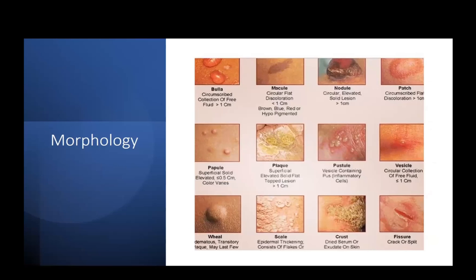Just a quick refresher. There are primary morphologies. Some textbooks will list one centimeter as the cutoff, some will list 0.5. Flat smaller lesions less than one centimeter are called macules; larger flat lesions greater than one centimeter are called patches. Same with papules — raised solid lesions less than 0.5 centimeters — and a raised solid lesion greater than this would be called a plaque. Familiarize yourself with these descriptive terms.